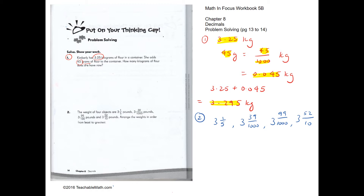For question 2, we have to arrange four weights in ascending order from least to greatest. By inspection, the greatest is the one with 52 tenths, since 52 tenths is more than one whole. The next is 8 and 2 tenths, so that is definitely the second greatest. Now let's compare 3 and 1 fifth with the rest.